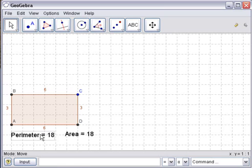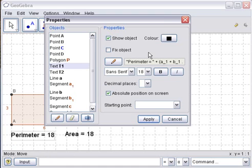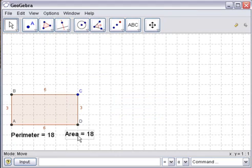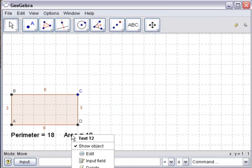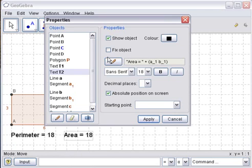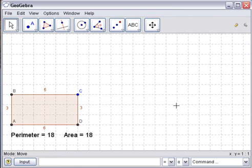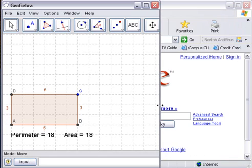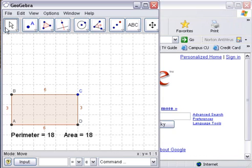And if you want you can right click on those, choose the properties, and select fix object. And that means that once you create your applet, the user will not be able to change the position of those by dragging them around on the screen. So I'll fix both of those. And then the last thing I'm going to do is make my window a little bit smaller because the applet will be the exact same size as your window. Okay.